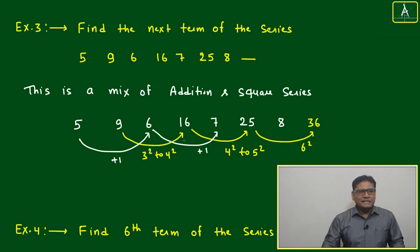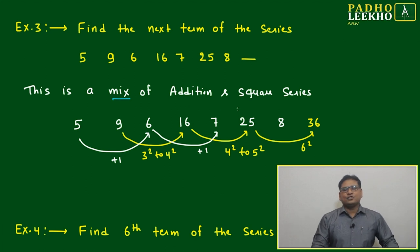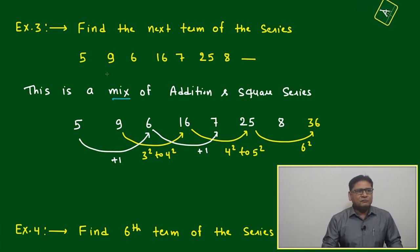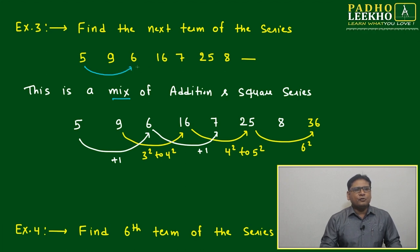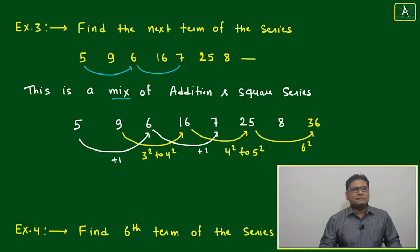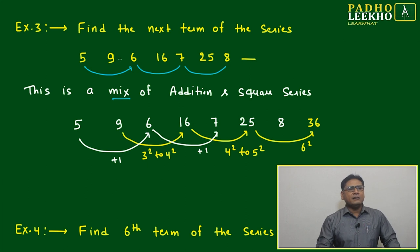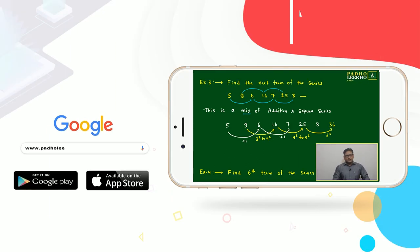Similarly, we will try to bifurcate this series into different series. We can say it is a mix of addition and a squared series. Like here, 5, 6, 7, 8 is following by alternate terms, and another side this is following by some other pattern - this is following by perfect squares: 3 squared, 4 squared, 5 squared. The next must be 6 squared, that is 36.